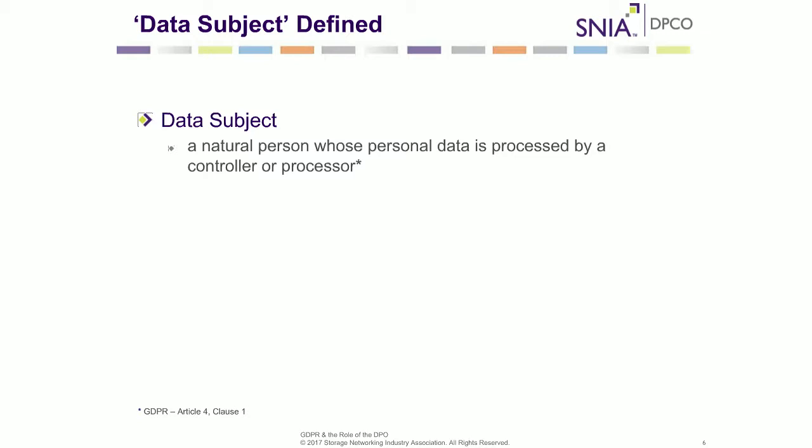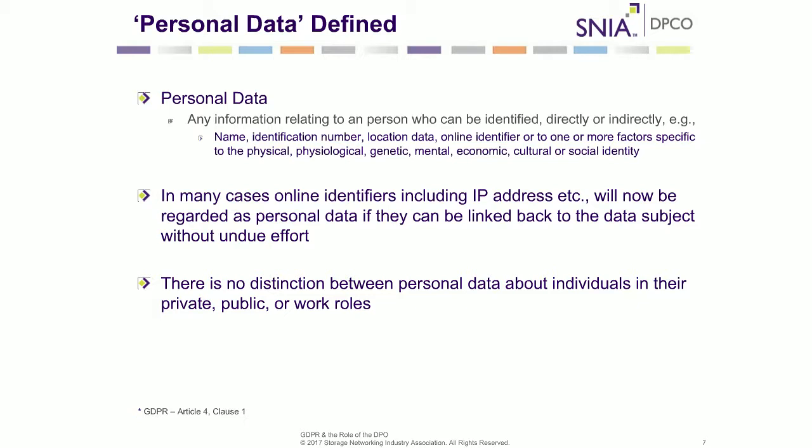A few definitions: a data subject is a person whose personal data is processed by a controller or a processor, which we will also define. Personal data is any information relating to a person who can be identified either directly or indirectly.